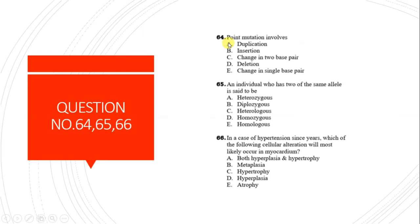Question 64: Point mutation involves change in a single base pair. Question 65: An individual who has two of the same alleles is said to be homozygous.